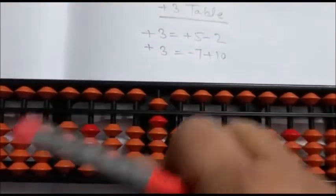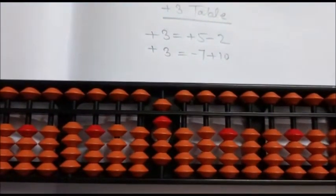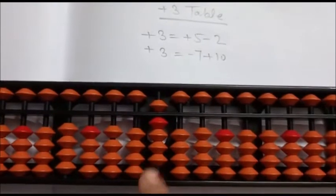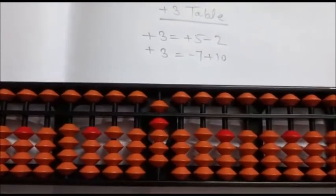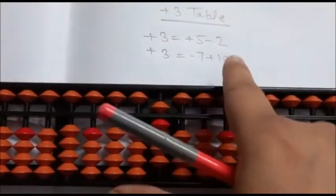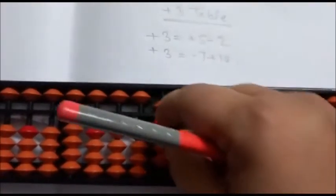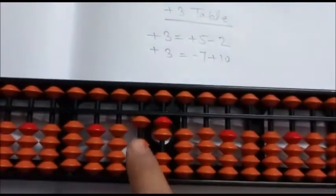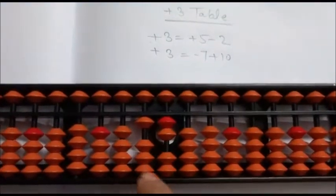Again, plus 3 is direct — answer is 9. Again, plus 3 using the second formula: minus 7 plus 10 — answer is 12.